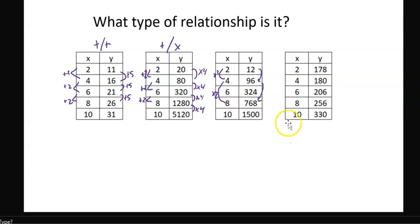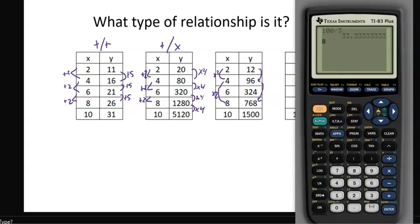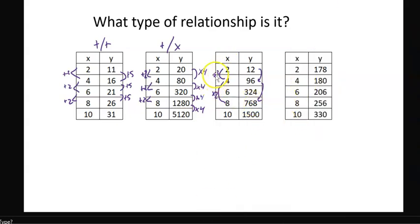So as that happens, how did these change? And I can just grab my calculator and do a little division to check it out. So I'm going to see 96 divided by 12. Looks like it's eight. And if I go 96 times eight, that pops me up to 768. So you'll notice this one, as X multiplies by something, Y multiplies by a constant. So I'm going to call this a times-times relationship, a multiply-multiply relationship.